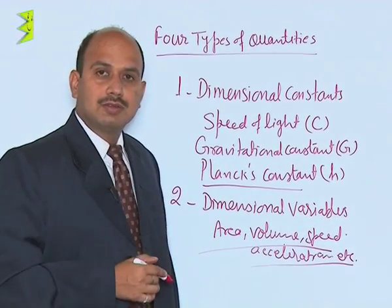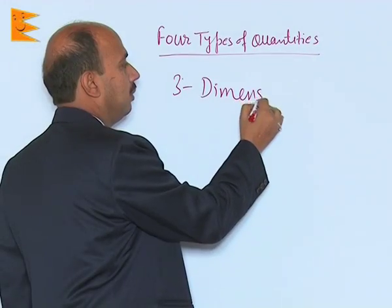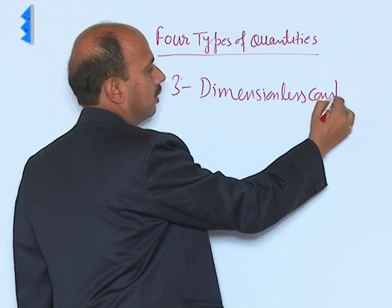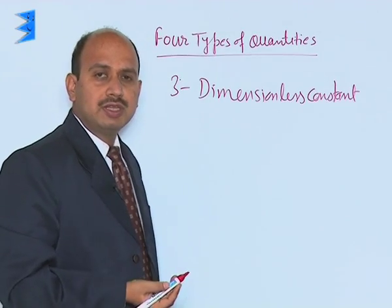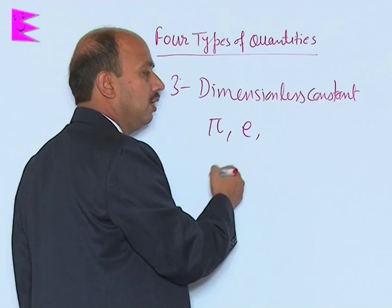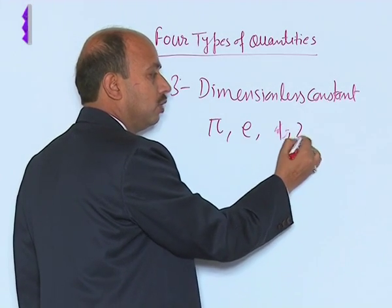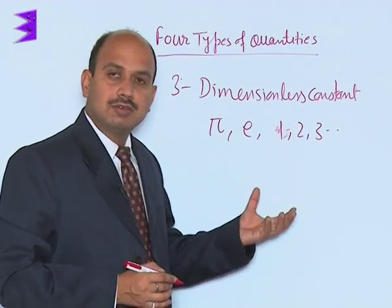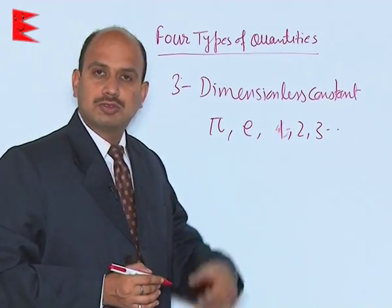The third one is dimensionless constants. In dimensionless constants, if in any formula you are getting values like pi, e, theta, or numbers like 1, 2, 3, etcetera — these types of constants which appear in a formula are known as dimensionless constants.